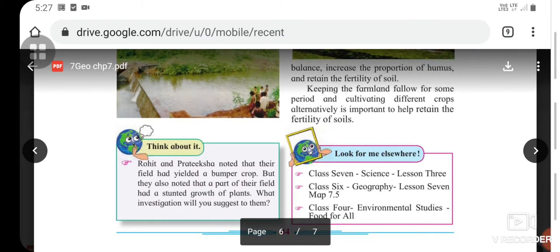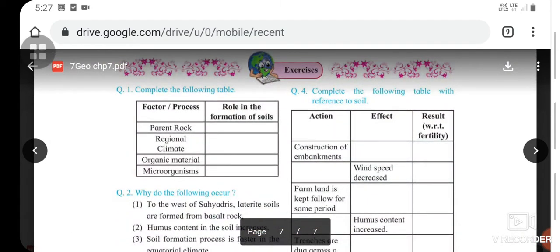Keeping the farmland fallow for some period and cultivating different crops alternatively is important to help retain soil fertility. Now here comes your exercise. The first question is about completing the table. You are given factors and processes, and you have to write out the roles of that factor and process in the formation of soil in the corresponding blank. First is parent rock, another is regional climate, third is organic material and microorganisms. You have to write the role of these factors in the formation of soil.